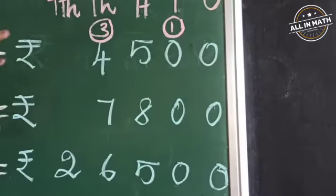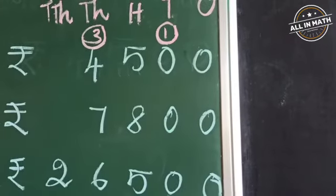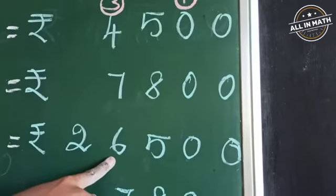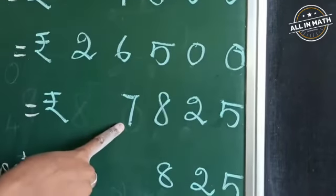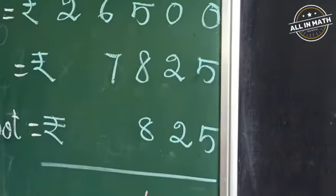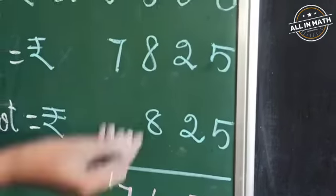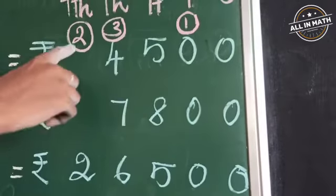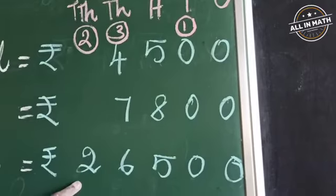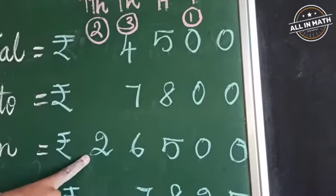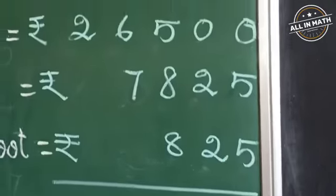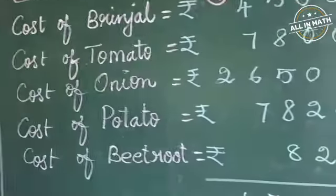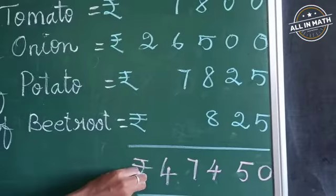Now we are going to add the numbers in the thousands place. 3 plus 4 is 7. 7 plus 7 is 14. 14 plus 6 is 20. 20 plus 7 is 27. There is no number here, so take 27 — write 7 in the thousands place and 2 in the ten-thousands place as a carry over. Look at the ten-thousands place: there is only 2 and carry over 2. 2 plus 2 is 4. So the total amount of sales in the vegetable shop is forty-seven thousand four hundred fifty rupees.